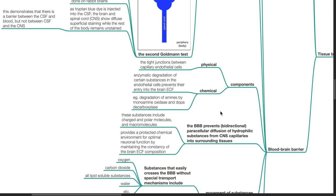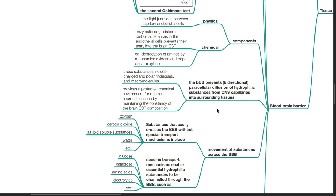Components of the blood-brain barrier. Physical component: The tight junctions between capillary endothelial cells. Chemical component: Enzymatic degradation of certain substances in the endothelial cells prevents their entry into the brain ECF. For example, degradation of amines by monoamine oxidase and dopa-decarboxylase. The blood-brain barrier prevents bidirectional paracellular diffusion of hydrophilic substances from CNS capillaries into surrounding tissues.